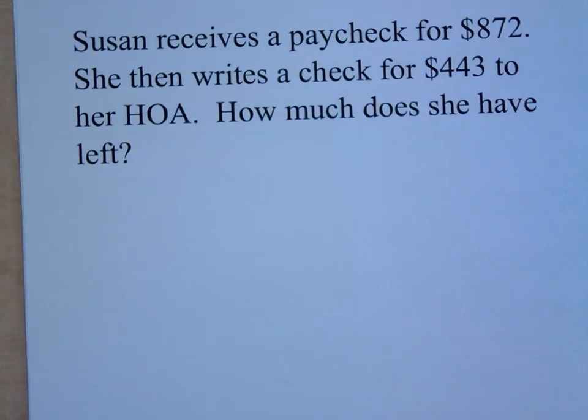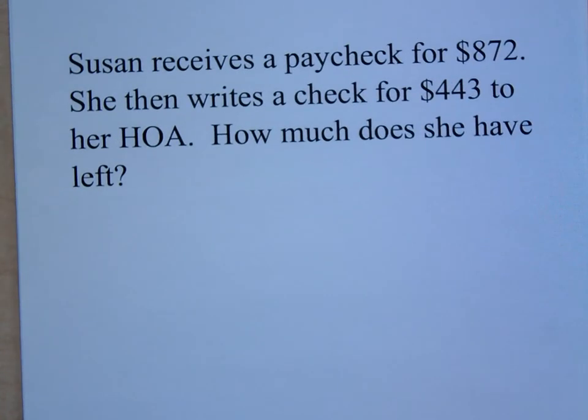All right, let's take a look at this example. I want us to use front-end rounding to get an estimate for what the answer is, and then we're going to actually find the exact answer and kind of compare the two. So Susan receives a paycheck for $872. She then writes a check for $443 to her homeowners association. How much does she have left out of her paycheck?